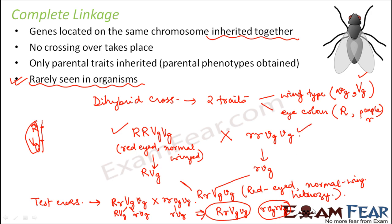There are no recombinants at all — the recombinants are zero. The phenotypes are obtained in a ratio of 1:1, so there are 50% chances of being like one parent and 50% chances of being like the other parent. The offspring are exactly like the parents with no recombinants formed.